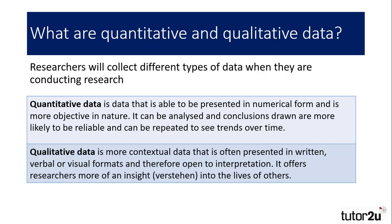Quantitative data is data that is able to be presented in numerical form, and is more objective in nature. It can be analysed and conclusions drawn that are more likely to be reliable, and it can be repeated to see trends over time.